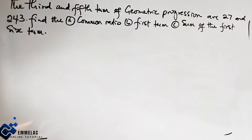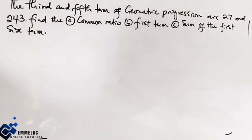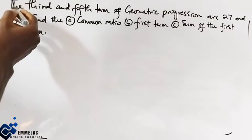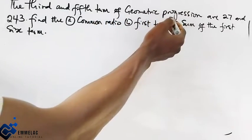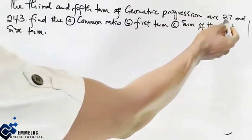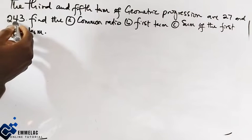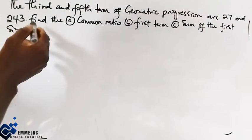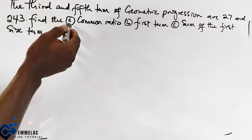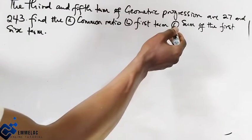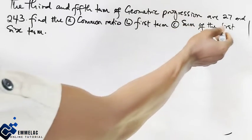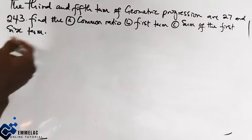Welcome to Emilak online tutorial. Today, still in the series on progressions, here is another question. The third and fifth terms of a geometric progression are 27 and 343. Find: A) the common ratio, B) the fourth term, and C) the sum of the first six terms.